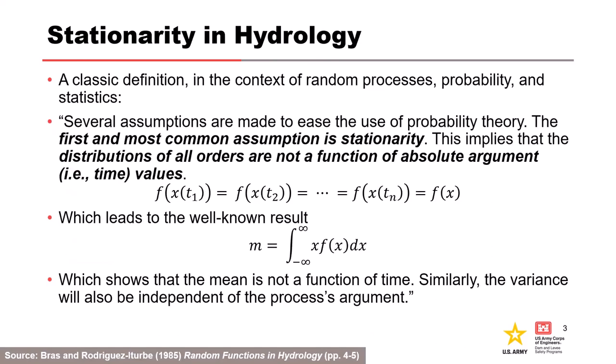One of the fundamental assumptions we make with any data set is that it's independent and identically distributed. To be identically distributed, all that data has to come from the same parent distribution. That parent distribution's statistical properties — like mean, standard deviation, and variance — can't vary with time. So as we're getting more and more data, those properties fundamentally should be the same.